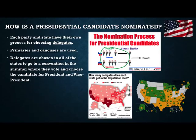Delegates are chosen in all of the states — all 50 states, even territories like Guam and the Marianas Islands get to vote and choose delegates. They go to a convention in the summer, which is a gathering of people elected to represent the party from across the country. At the convention, they vote and choose the candidate for president and the candidate for vice president. It's the convention which makes that choice official, and that person is then officially called the nominee.